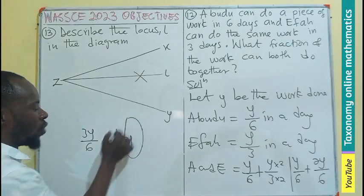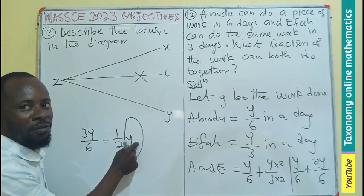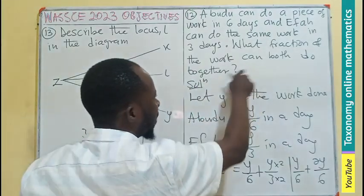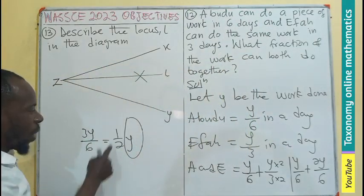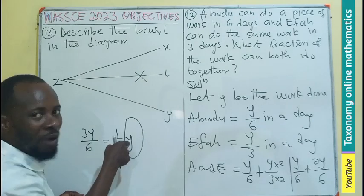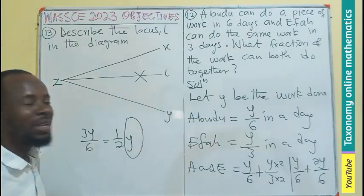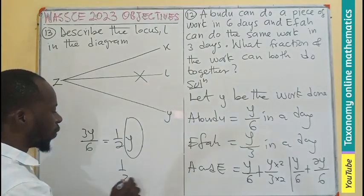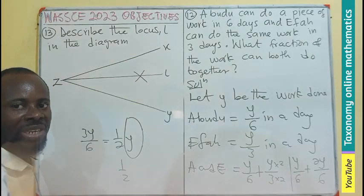If we find a common factor, 3y divided by 6 simplifies to y/2. Meaning they are working half of the work done. The fraction of the work done by the two of them in a day is 1 out of 2. That is the fraction the question is demanding for.